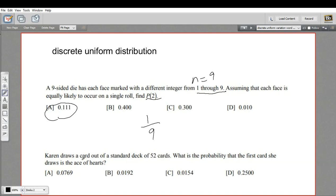All right, let's look at the next one here. It says, Karen draws a card out of a standard deck of 52 cards. What is the probability that the first card she draws is the ace of hearts? Okay. There's only one ace of hearts in a deck of cards. So this is one card out of that 52.